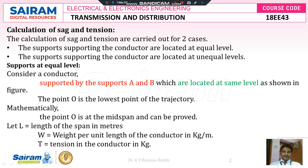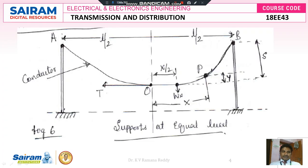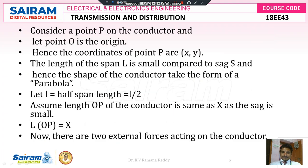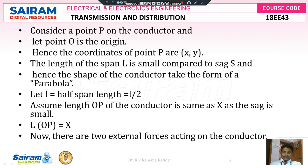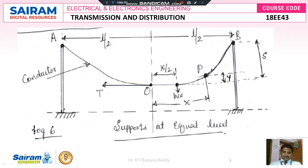Let us consider a conductor which is supported by two towers, or two poles, or two supports A and B, which are located at the same level as shown in the figure. These are the two towers: tower A and tower B. The two towers have the same height and same distance.